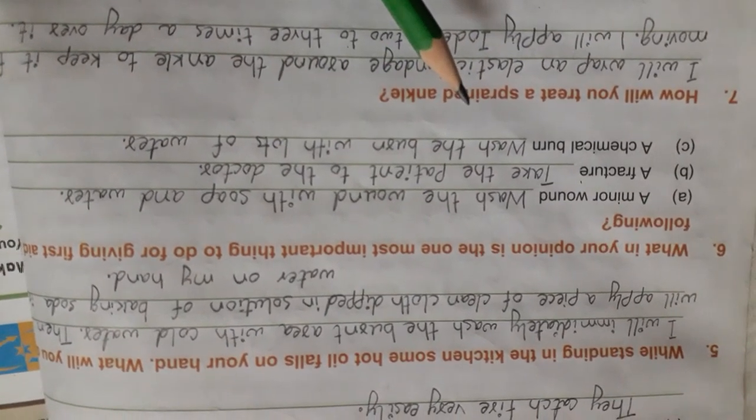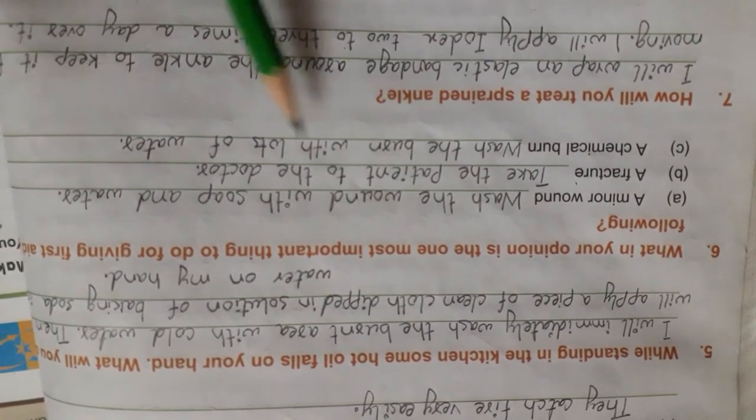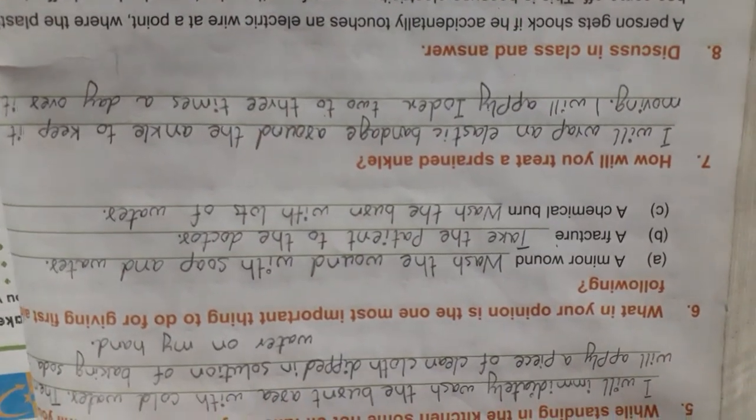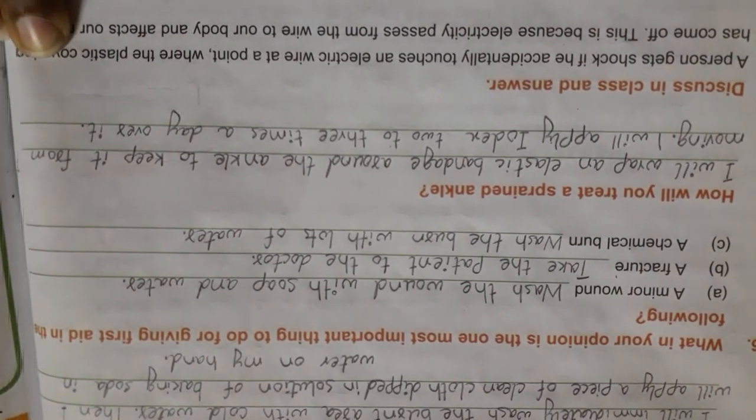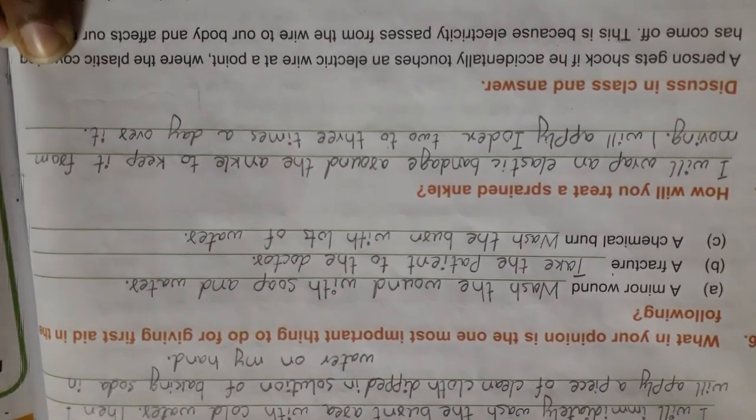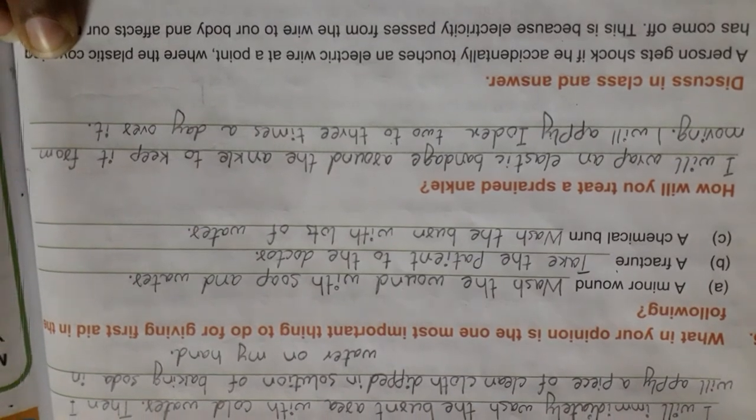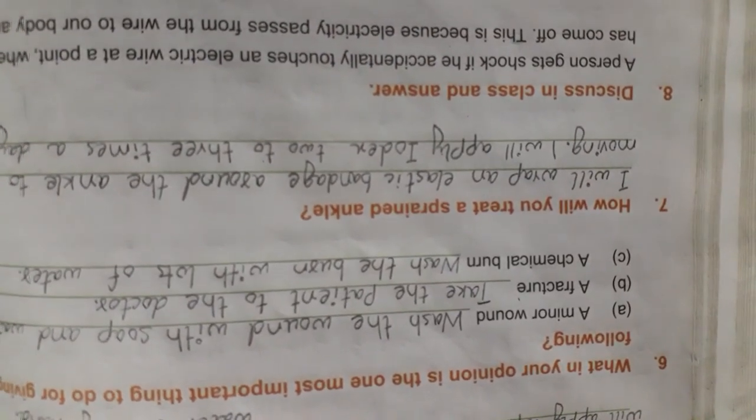A chemical wound. If there is a chemical wound on your skin, you will wash the wound with lots of water. A sprained ankle. Keep it from moving. First of all, we will wrap elastic bandage on the ankle so that it will not move and cause more pain. I will apply Iodex 2 or 3 times a day over it. We will lightly rub it until it will be okay.